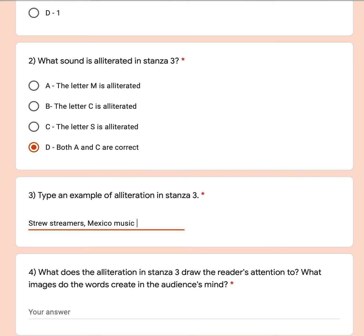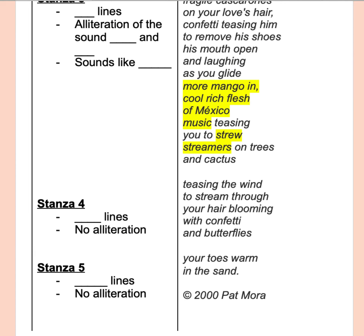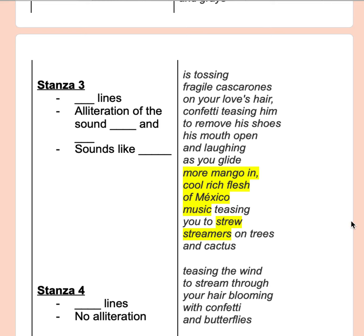Question 4: What does the alliteration in stanza 3 draw the reader's attention to? What images do the words create in the audience's mind? Let's start with the alliteration of the letter M. The author says, his mouth open and laughing as you glide more mango in. Cool rich flesh of Mexico Music. Here, the author alliterates the sound M — more mango, Mexican Music. It really rolls off the tongue quite easily, giving the sounds a very musical quality, sort of like the music that the author is talking about in the text.